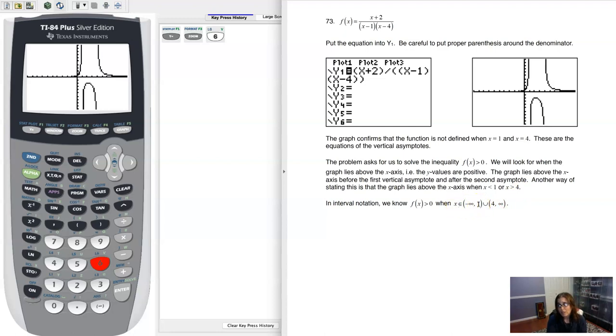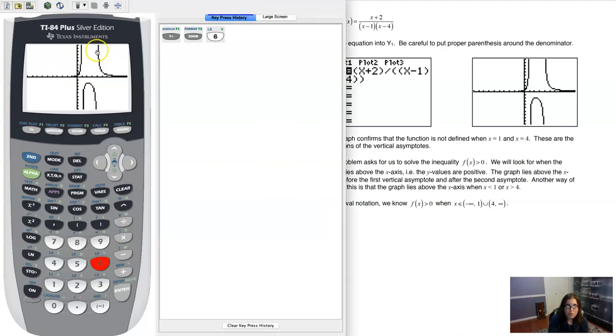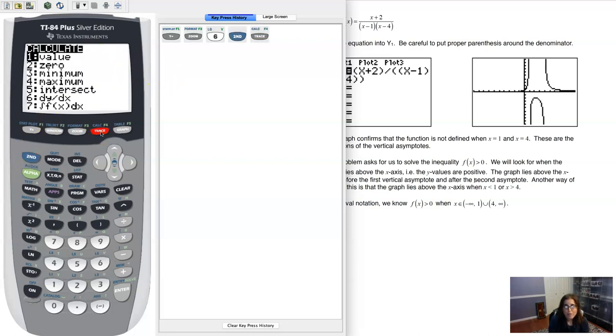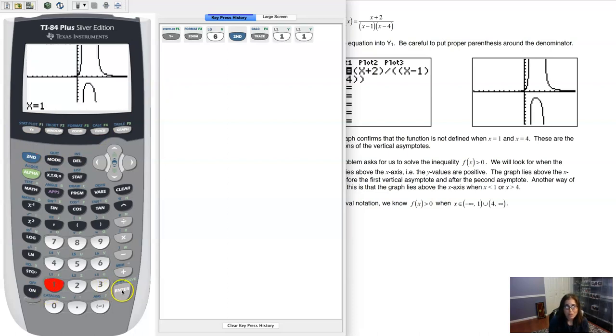So I say, as long as x is between negative infinity and 1, or 4 and infinity, the graph is above the x-axis. You can see negative infinity to positive 1, I'm above the x-axis, or positive 4 all the way to infinity, I'm above the x-axis. If you wanted to just check that those were your domain violations, just plug in x equaling 1.